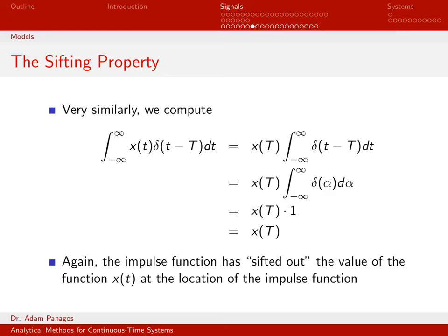So x at time t equals capital T is just a scalar — I can bring that outside my integral, and I'm left with integrating my time-shifted impulse function. At this point, I need to figure out what the integral from minus infinity to infinity of delta of t minus capital T is equal to. We know by definition, if I was to integrate across an impulse at time zero, I would get an area of 1.